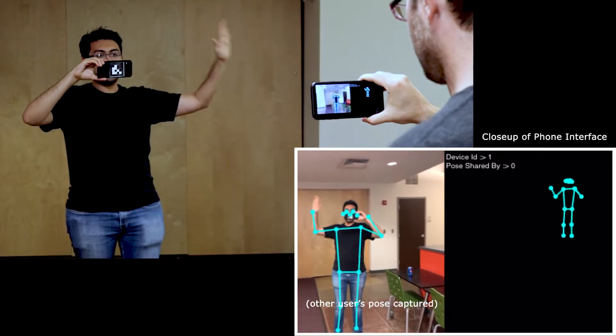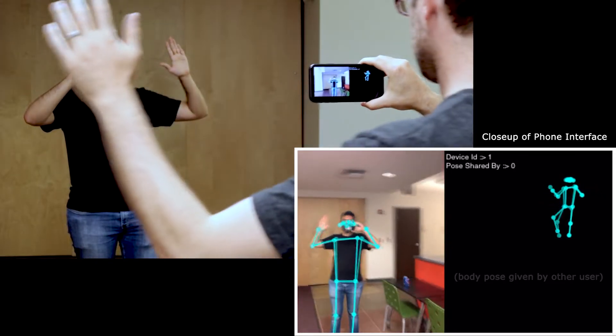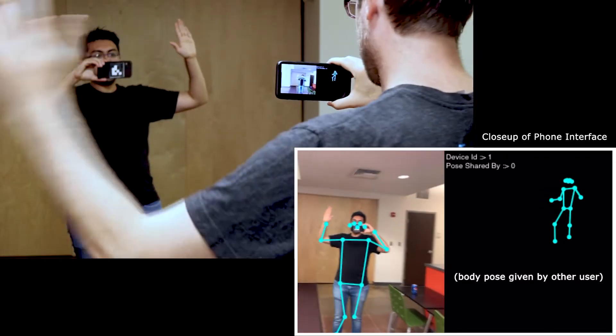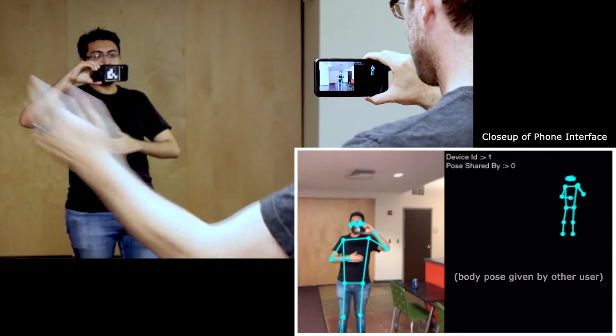Body pose can be computed and then shared back to the respective user in real time, offering full body tracking without instrumenting the user or the environment. This is the core idea behind Body Slam.